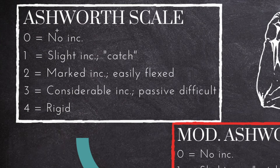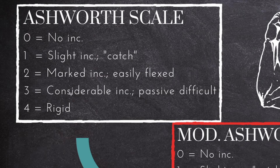Let's review the original Ashworth Scale first. It is a five-point scale starting at zero, going all the way to four. Zero means there's no increase in tone. One means there's a slight increase in tone, usually with a catch — a sudden slight increase in tone somewhere in the range of motion as the therapist is moving the limb. Two means there's a marked increase in tone; however, the limb is still easily flexed. Three means there's a considerable increase in tone with passive movement being difficult — it would be difficult for the therapist to move the limb through its range of motion. Four means the limb is rigid in either flexion or extension, so the therapist would not be able to move the limb.